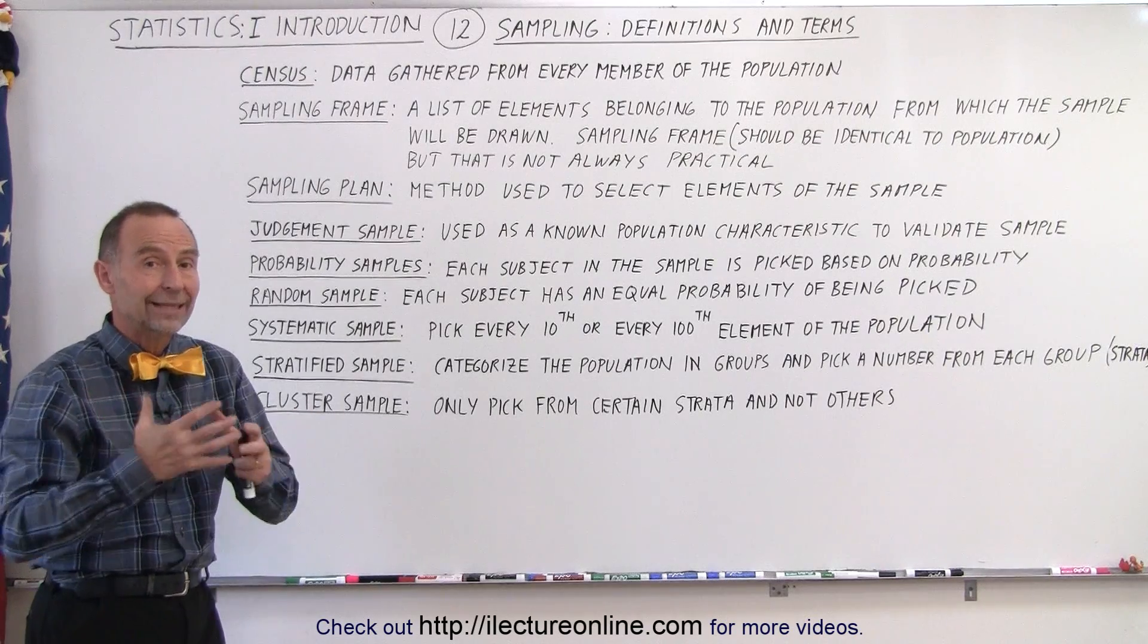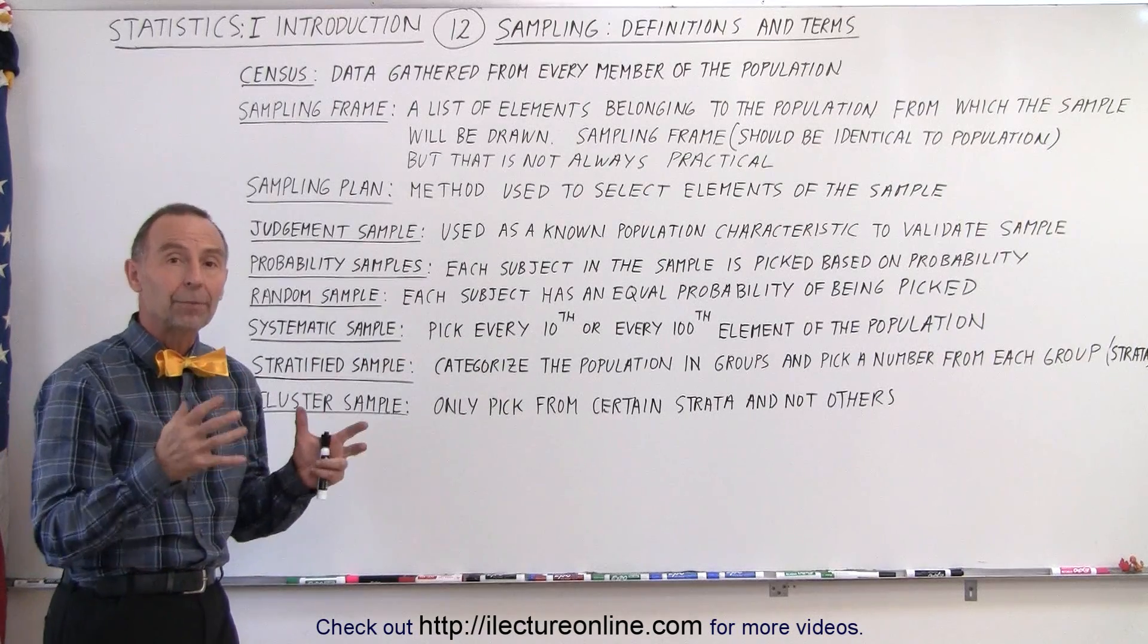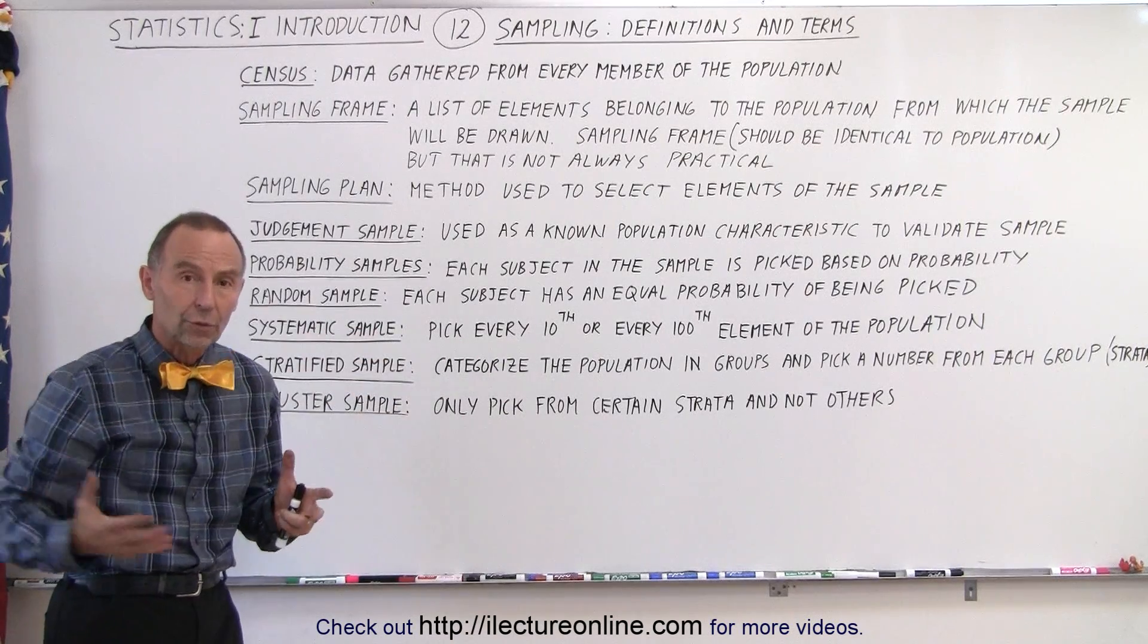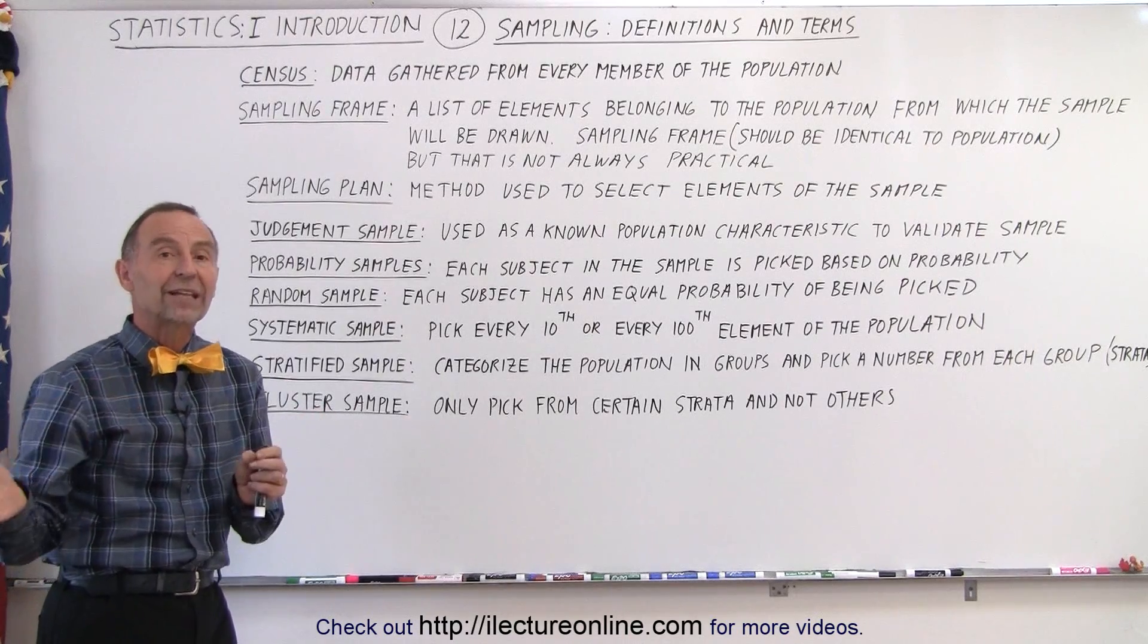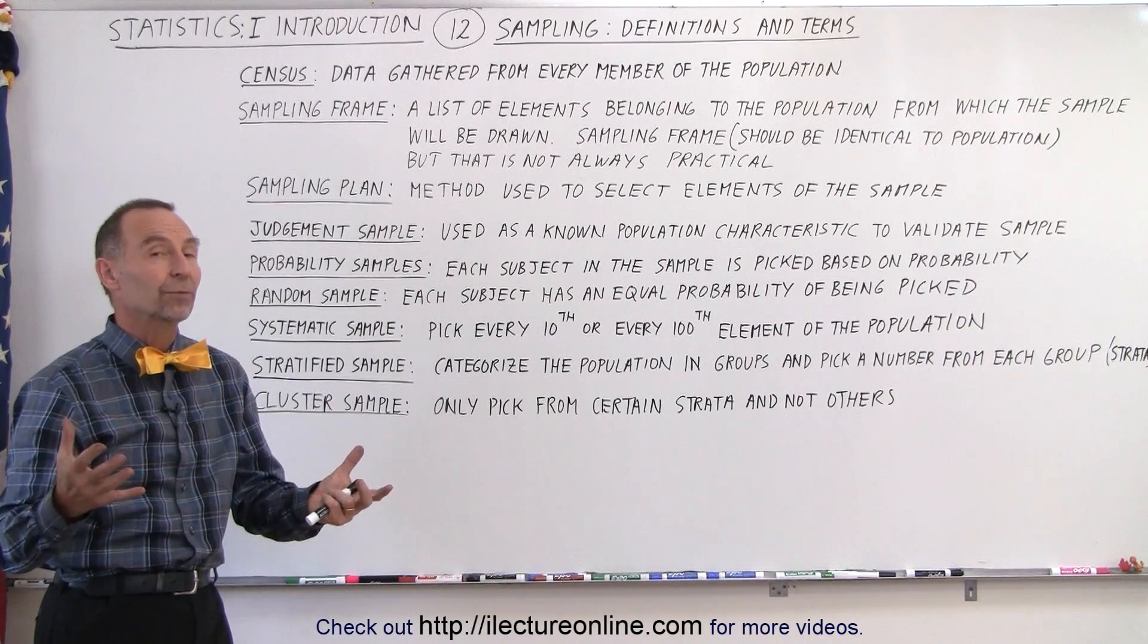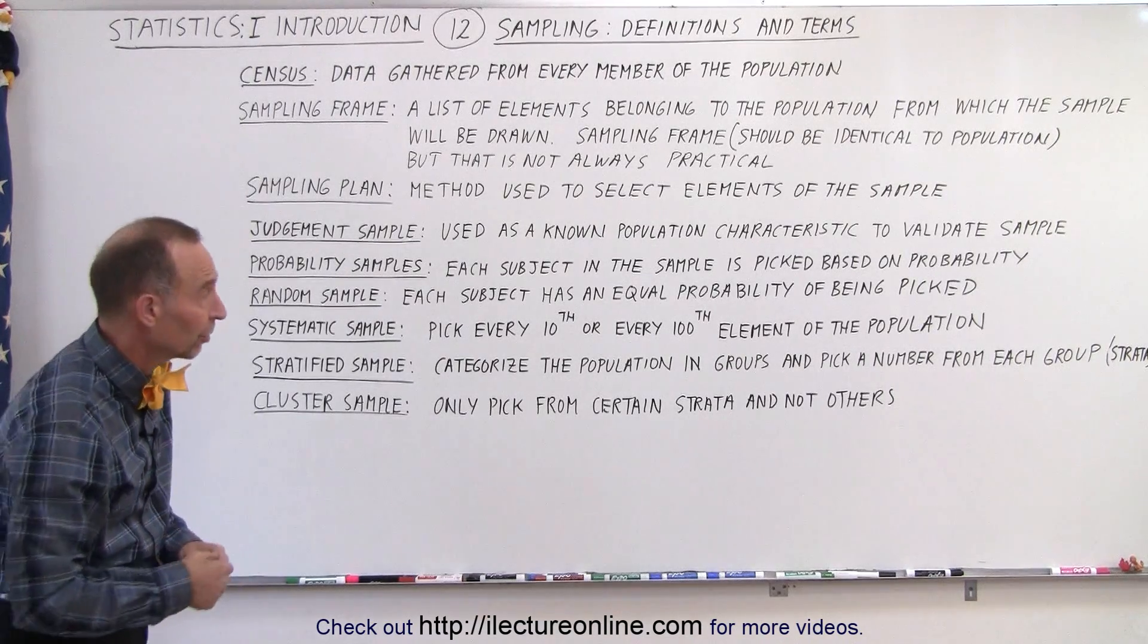For example, you may know that the average height of the people in your population is 5'9". Then you pick a sample, you test or you question a small group of people in your sample, and then you see if you get the same result as the total population. If you don't, you don't have a good sample because it should represent the population.